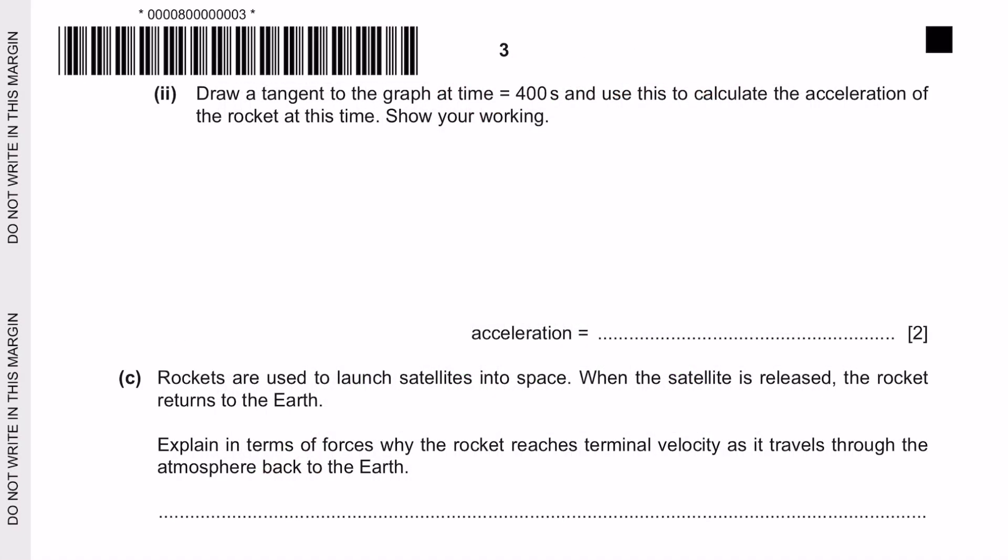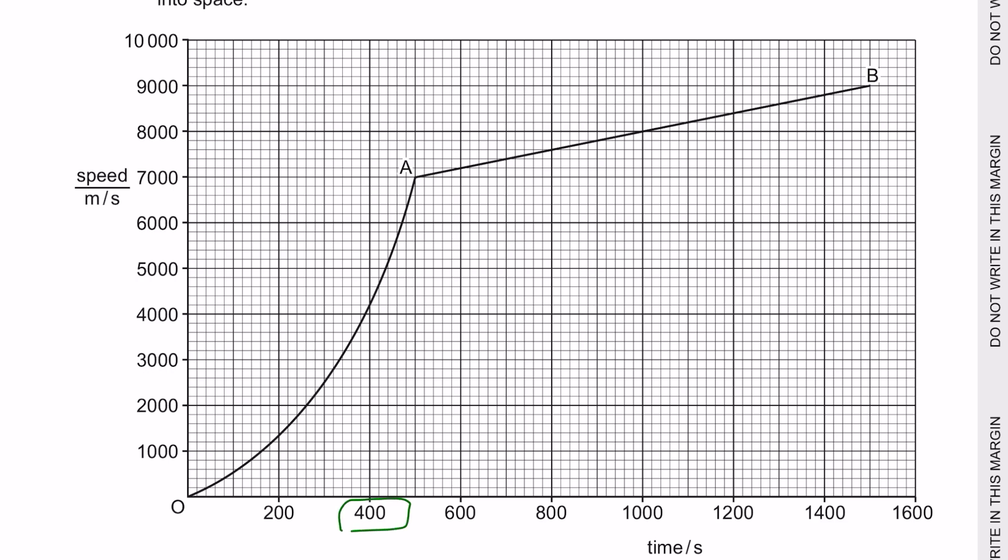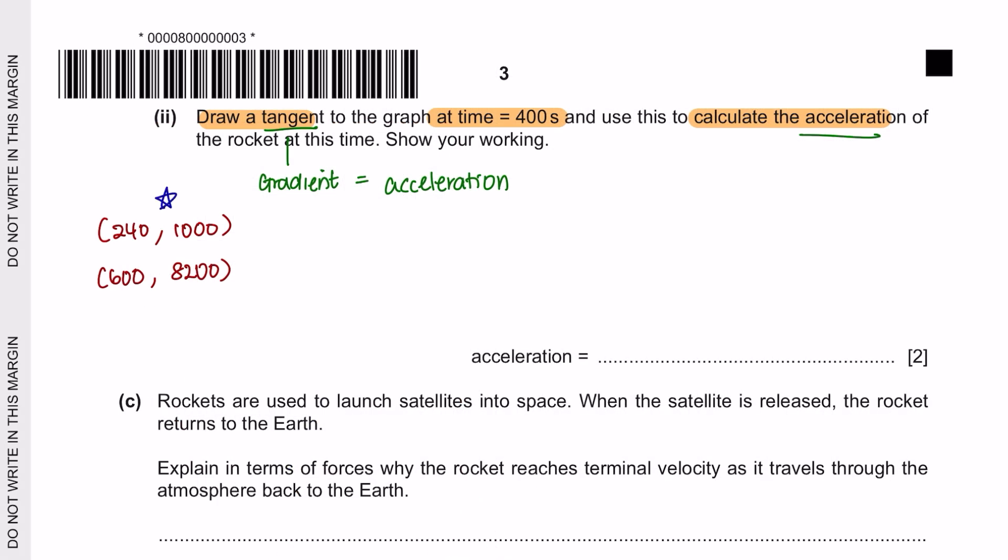Now let's try the question part 2. Draw a tangent to the graph at time 400 seconds and use this to calculate the acceleration of the rocket at this time. Remember, tangent gives you the gradient and gradient is the acceleration. So let's draw a tangent at time 400 seconds. Once you've drawn a tangent, pick two points on the tangent. I have picked this point and this point. Try to pick two points which are far apart from each other to get a more accurate answer. So the points lie on coordinates 608, 200 and the other point lies on 240 to 1000. Now we're going to use the coordinate to find the gradient. I'm sure you have learned this in maths. We will use the change of y over the change of x to find the gradient, and I've obtained 20. Don't forget the unit is meter per second square. Now any answer from 17 to 23 meters per second square is acceptable.